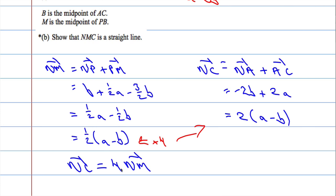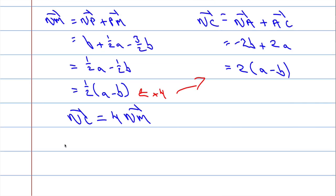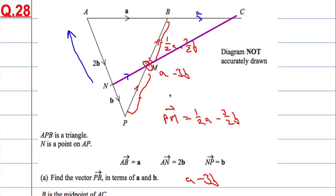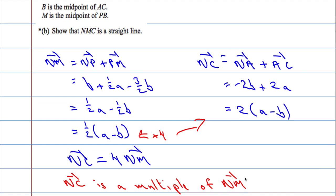So we can see that NC is equal to 4 times NM. That means NC is a multiple of NM. And they share a common point M. See, they have a common point N, M, and NC have a common point N.